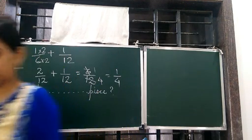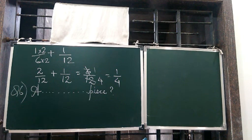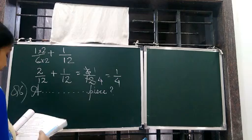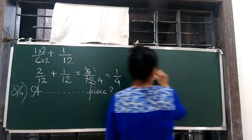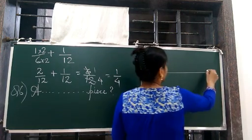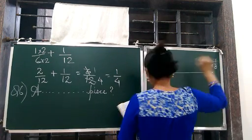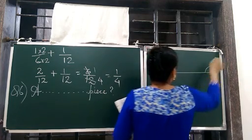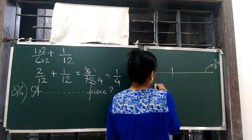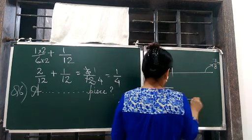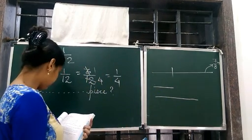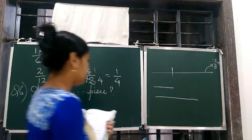Question number 6 — I am going to read the question for you, children. A piece of wire 7 by 8 meter long broke into 2 pieces. So there is a piece of wire whose measurement is given as 7 by 8 meters. This has been broken into 2 pieces. So this is one piece and this is another piece. One piece is 1 by 4 meters.